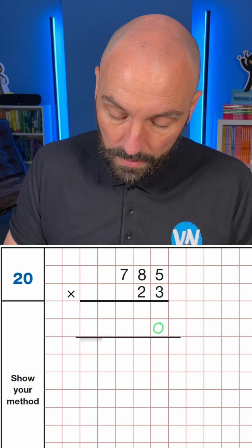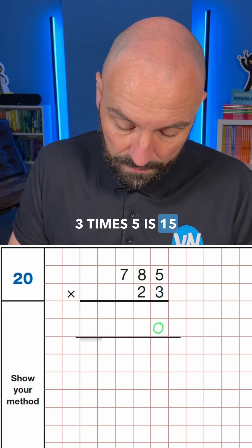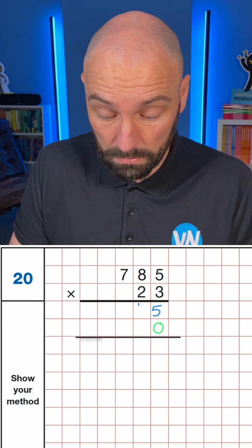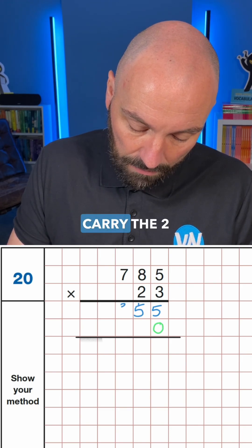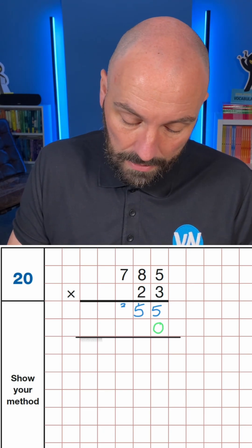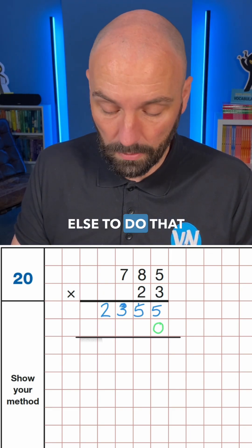So let's go through it. So the first one is 3 times 5. 3 times 5 is 15, so we put the 5 in, carry the 1. 3 times 8 is 24, add the 1, is 25. So we'd put the 5 in, carry the 2. 3 times 7 is 21, add the 2, is 23. So we've got the 3 in, and then the 2, as there's nothing else to do that.